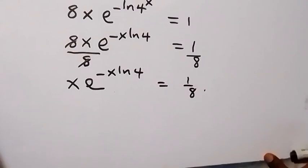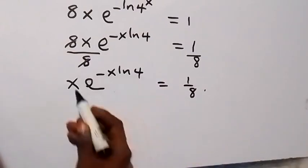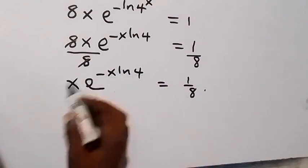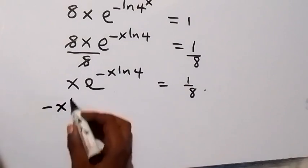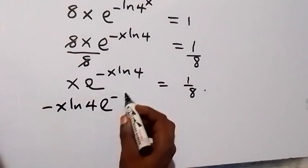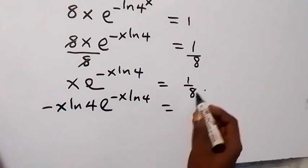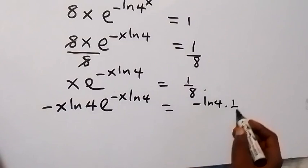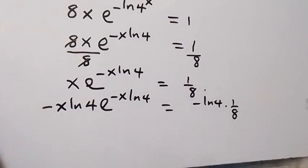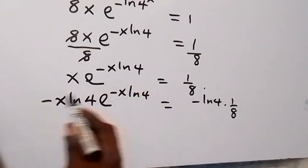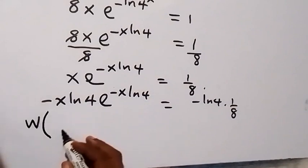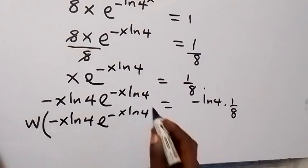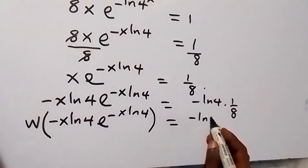Since we have minus x ln 4 in the exponent but just x as the coefficient, let's multiply both sides by minus ln 4. This gives us minus x ln 4 times exponent of minus x ln 4 on the left side. On the right side, we multiply by minus ln 4, giving minus ln 4 over 8. Now we have the power and the coefficient matching, ready for the W Lambert function.